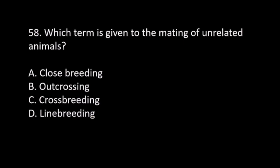Number 58. Which term is given to the mating of unrelated animals? A. Close breeding. B. Outcrossing. C. Crossbreeding. D. Line breeding. The answer is B. Outcrossing.